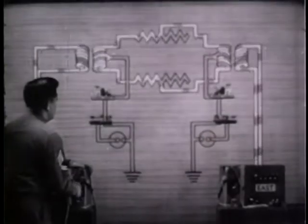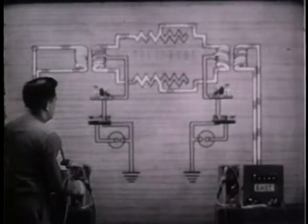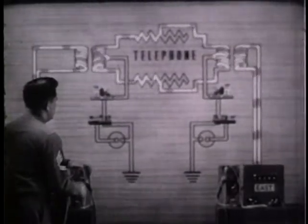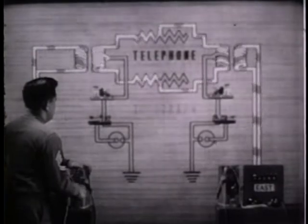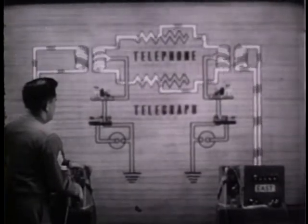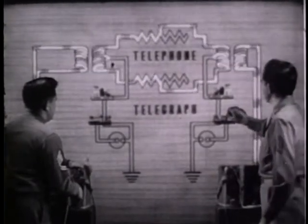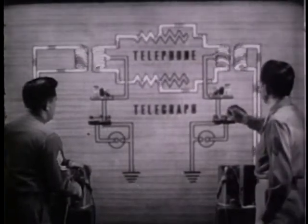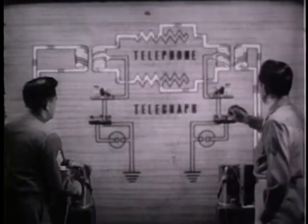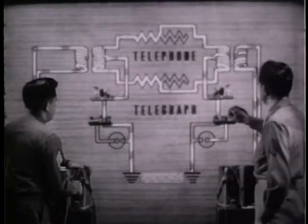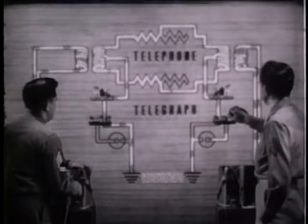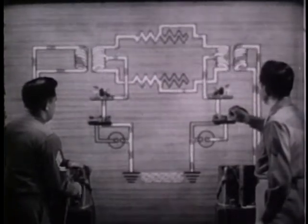Under ideal conditions, the currents in a telephone circuit simplexed for telegraph look like this. Since both sides of the line are alike, this circuit is balanced.